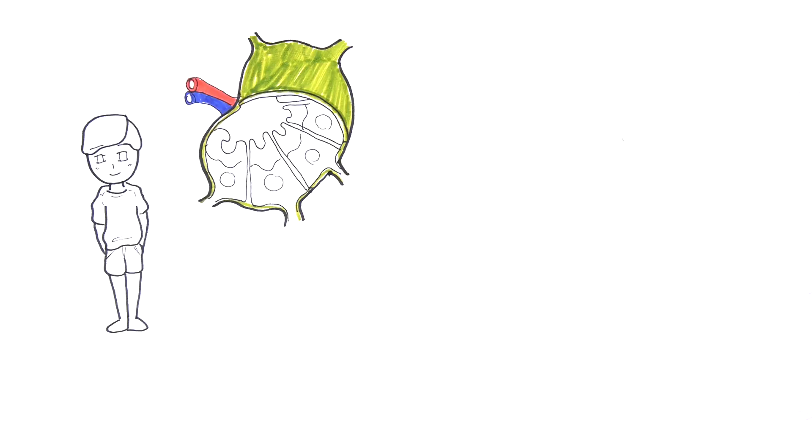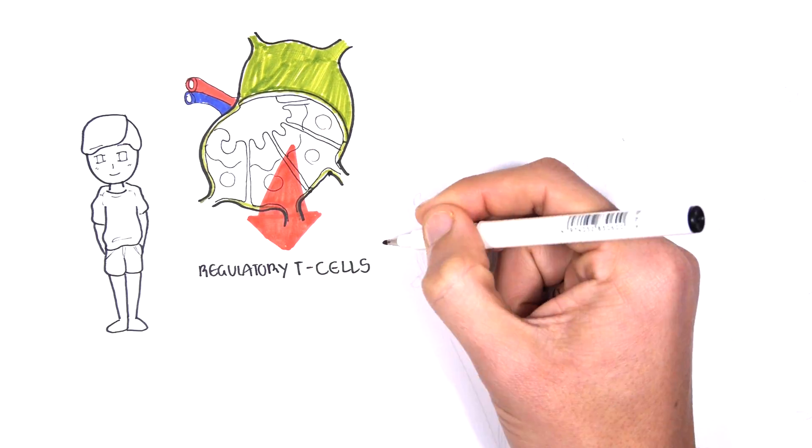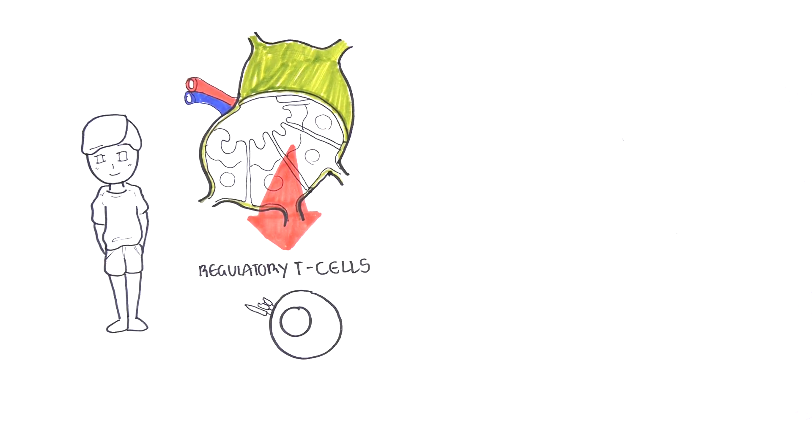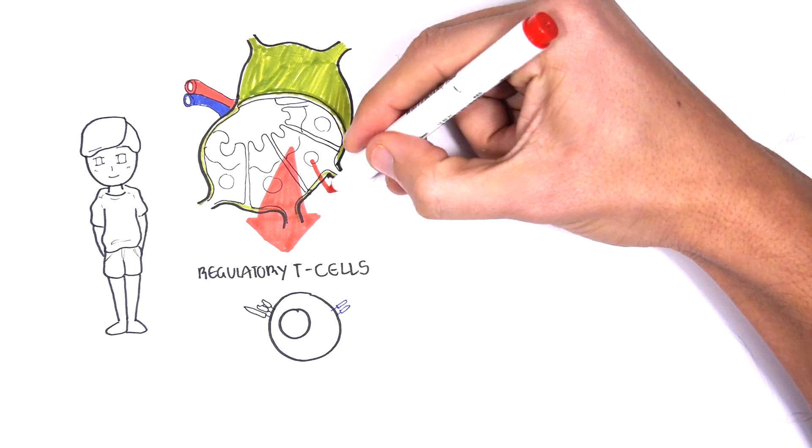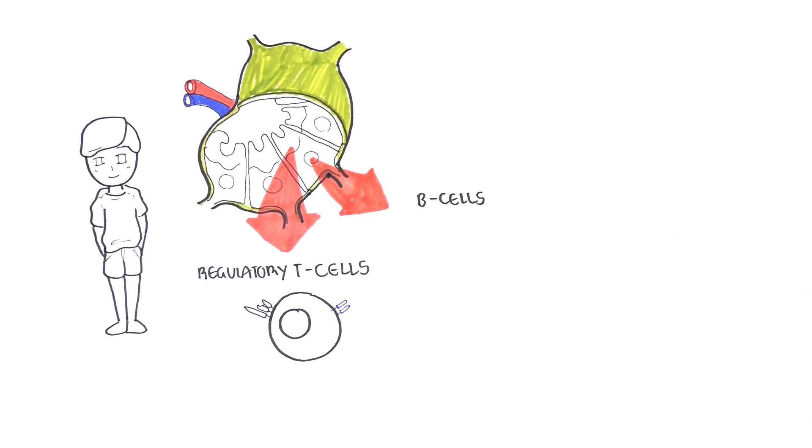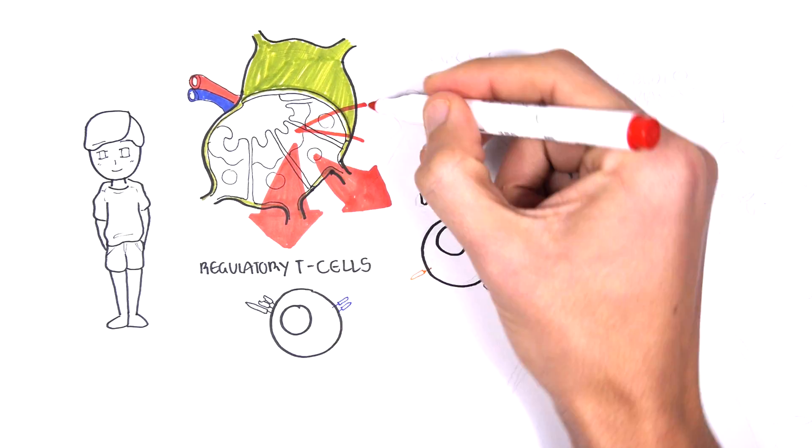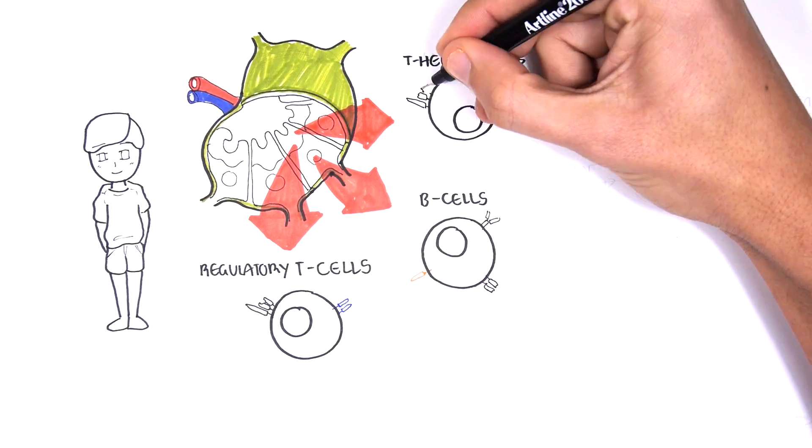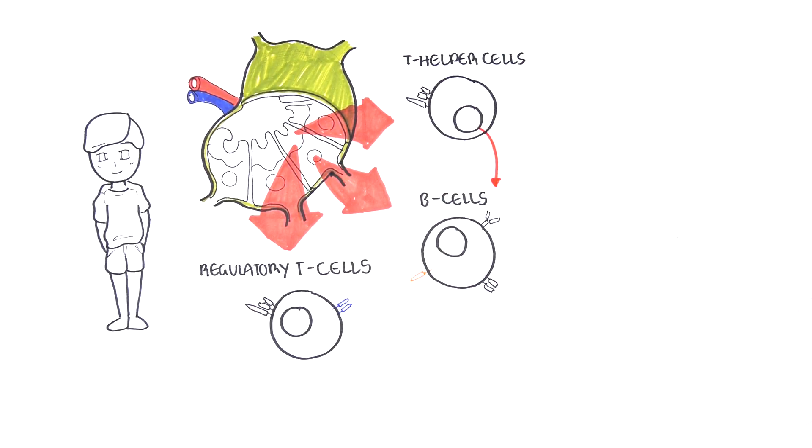The key immune cells here include regulatory T cells that help balance part of our immune system, B cells, the cells responsible for producing antibodies, and T helper cells which help activate these B cells to produce antibodies.